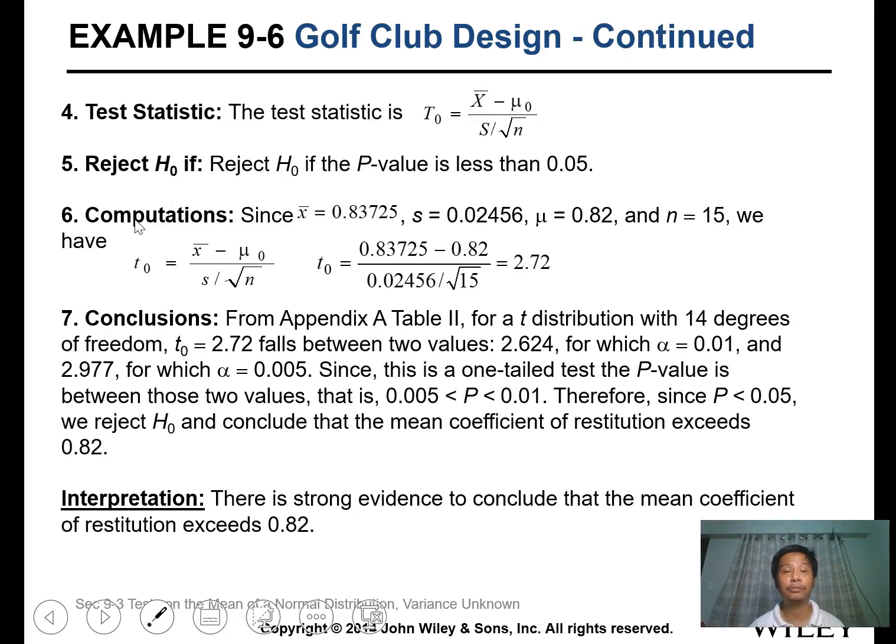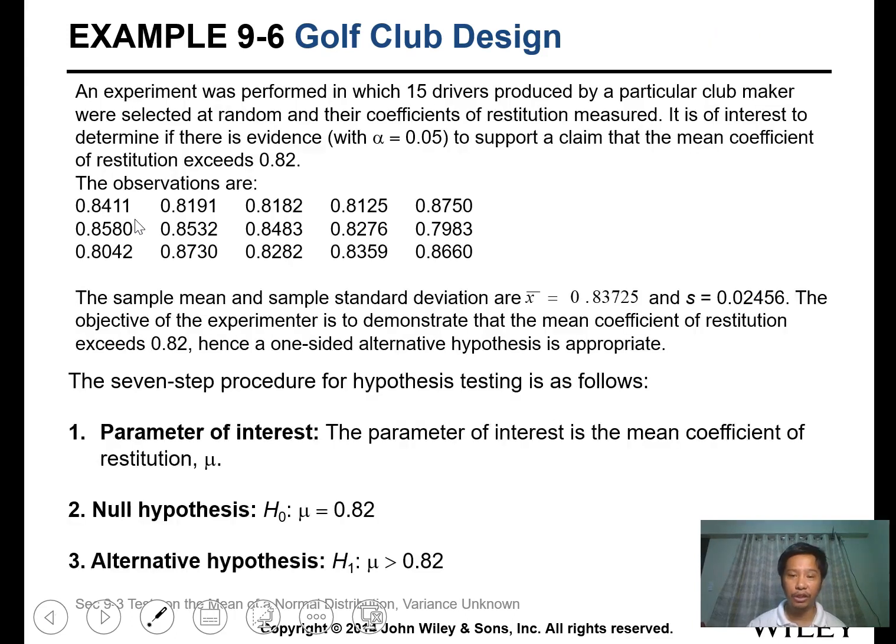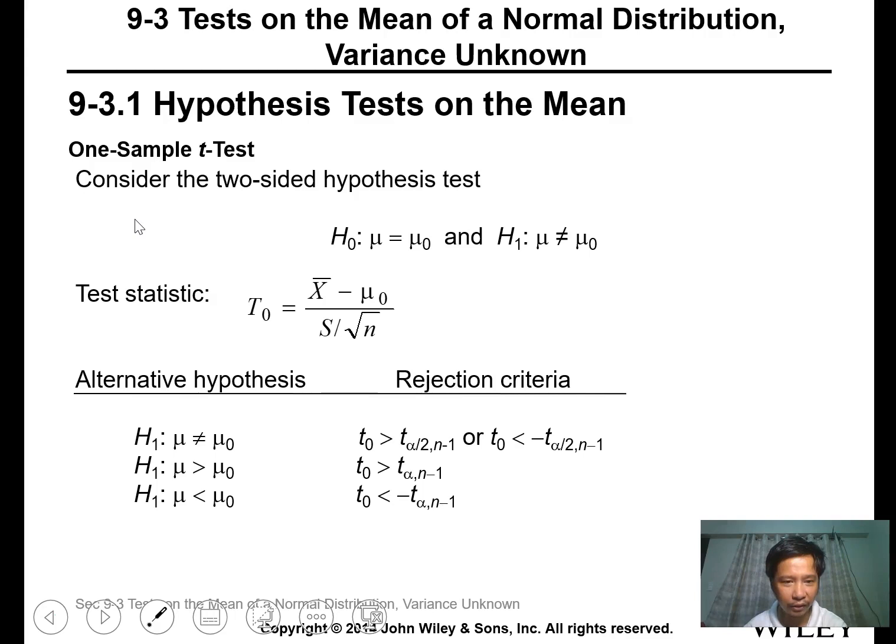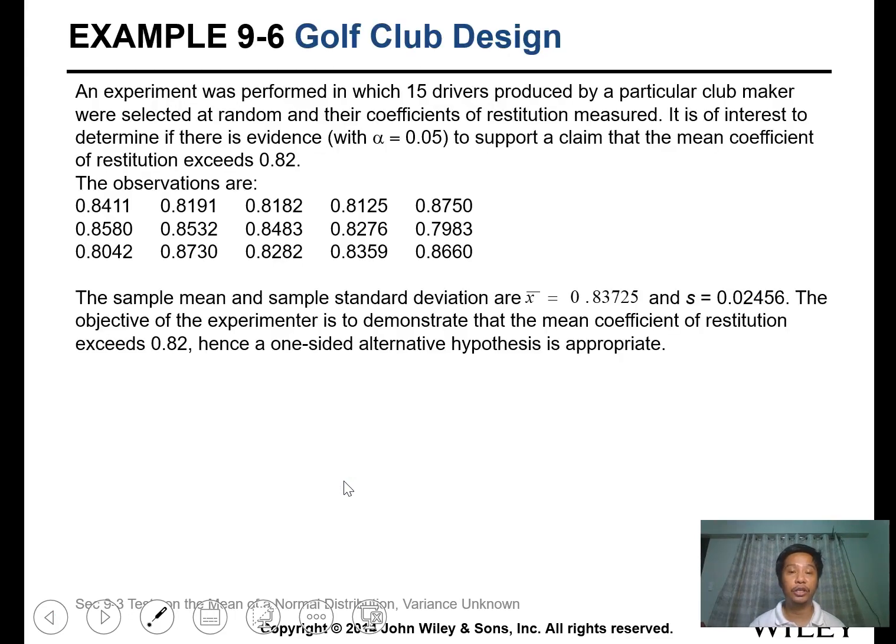We'll have the seven-step procedure. Parameter of interest: the mean coefficient of restitution. Null hypothesis is mu equals 0.82. Alternative is mu greater than 0.82. This is a one-sided alternative hypothesis. We're going to use the t-test because we don't know the standard deviation of the population. We'll reject the hypothesis if the p-value is less than 0.05, or if t calculated is greater than the critical t value.